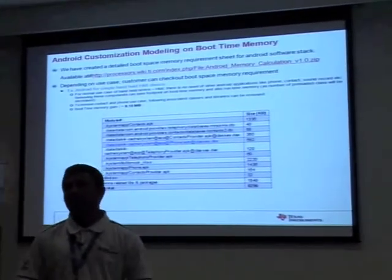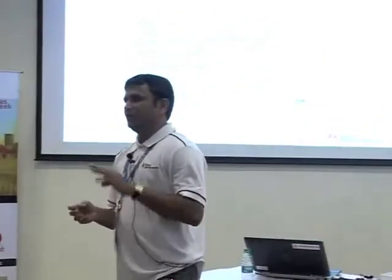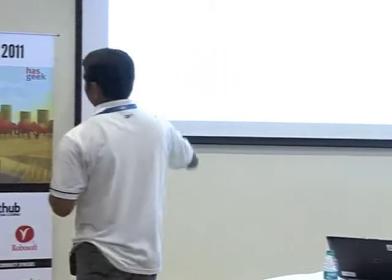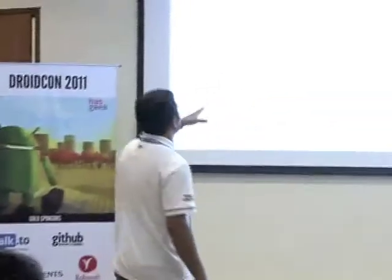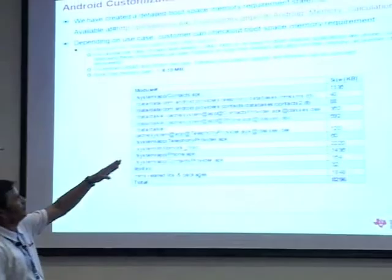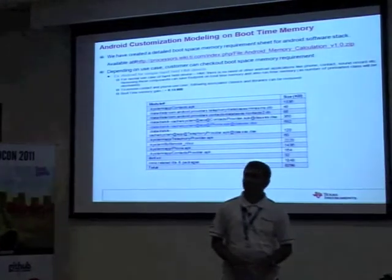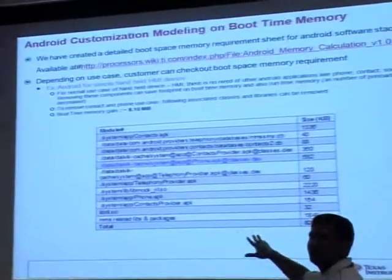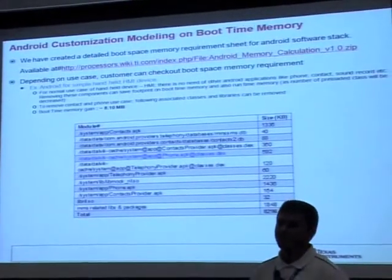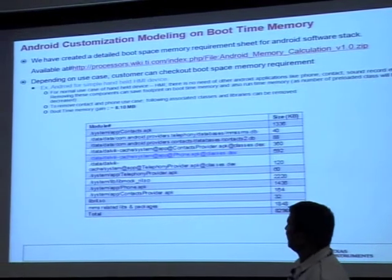Now in terms of customization: how do you customize the Android memory footprint? We will talk about boot-time memory footprint and run-time memory footprint. For boot-time, I need to remove some components — I don't want contacts, I don't want phone — I need to remove them from my Android package. We have prepared one utility that helps you understand: if I remove this component, how much memory will I save? Taking one use case — removing contacts, phone, and sound decoder — it saves around a certain amount of memory. I can straight away go and delete those packages — no need to worry about source code failure.